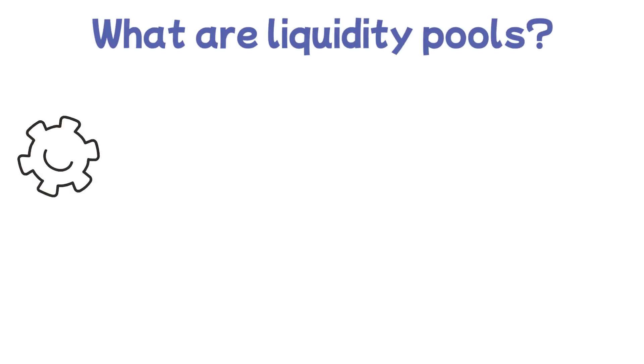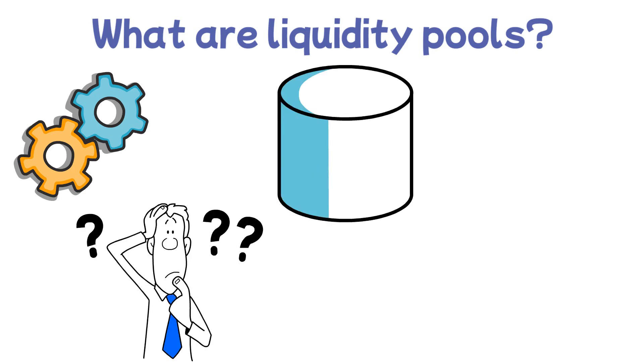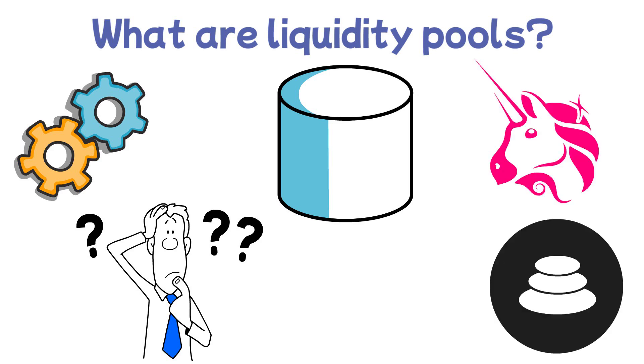So what are liquidity pools, how do they work, and why do we even need them in decentralized finance? Also, what are the differences between liquidity pools across different protocols, such as Uniswap, Balancer, or Curve?